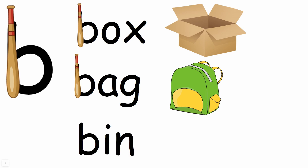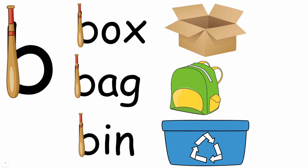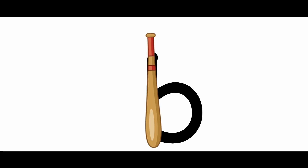Let's read our next word. What do you notice here on our first letter? I see it's a line, so it starts with a bat. And the word bat starts with b, so that means this is a b. Let's blend it: bin. Again: bin. It's a bin. Very good. So now we know for lowercase, if it starts with a bat, then the letter is b — lowercase b.